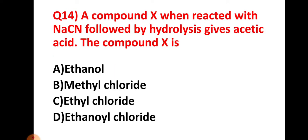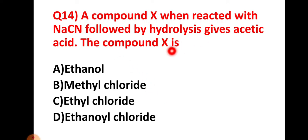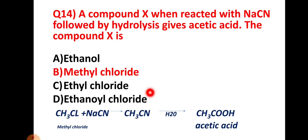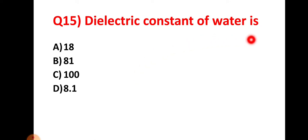Question number fourteen: a compound X, when it reacts with NaCN followed by hydrolysis, gives acetic acid — what is compound X? Options: A: ethanol, B: methyl chloride, C: ethyl chloride, D: ethanol chloride. If we set up the reaction — compound X reacting with NaCN, then hydrolysis to give acetic acid — the correct answer is methyl chloride (CH3Cl), option B.